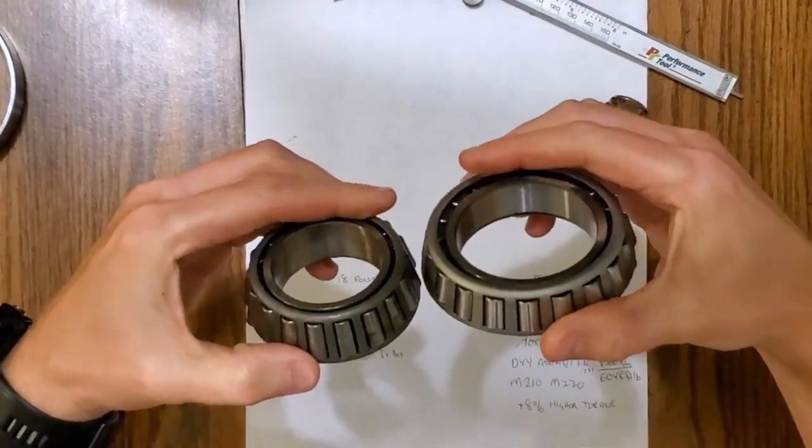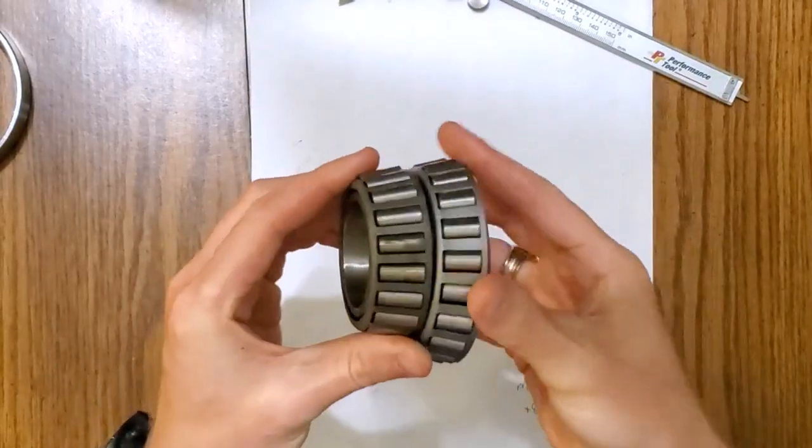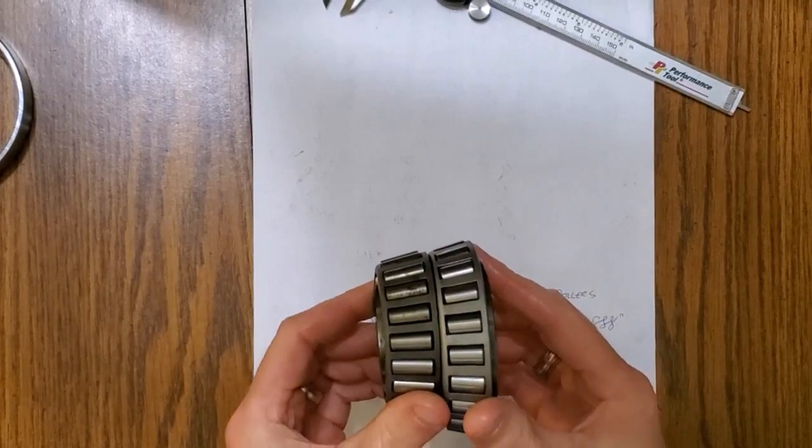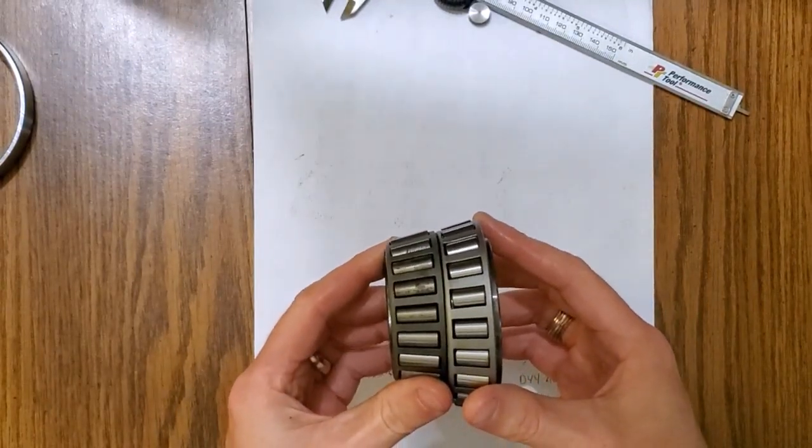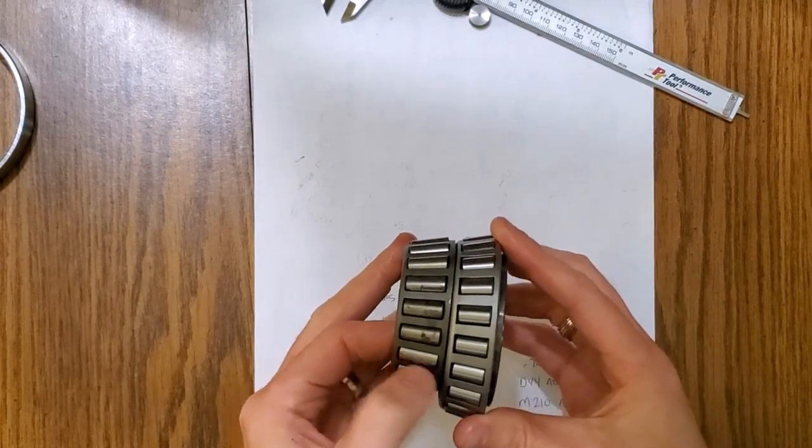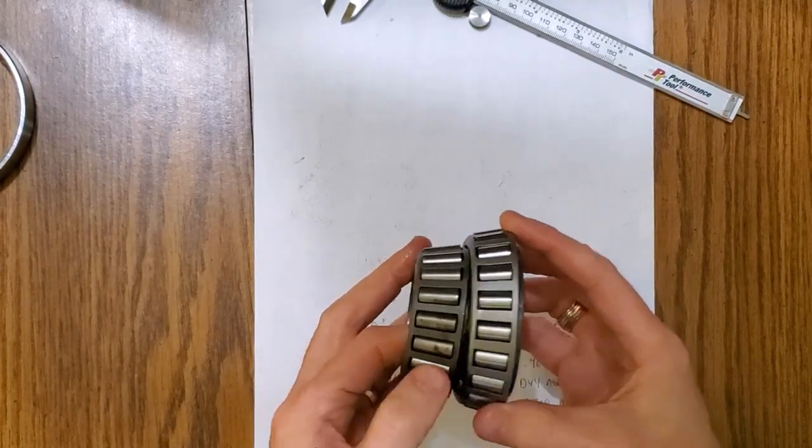You have a similar degree of angle on these. If you were to line them up, you can see they're about the same angle. So that didn't change. But the bearings on the old one are longer. And Jeep engineers, Dana engineers decided you didn't need that much length for the side load of the truck.